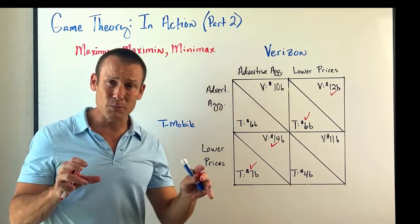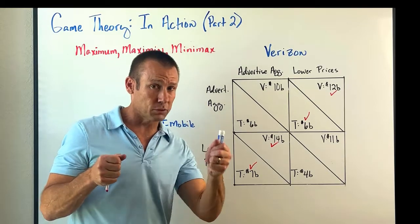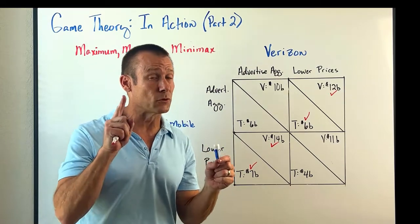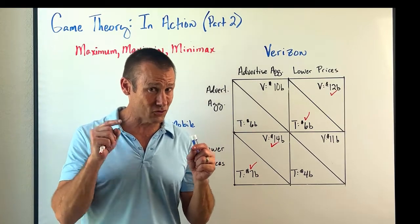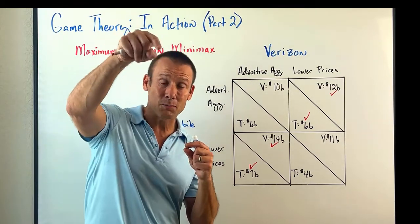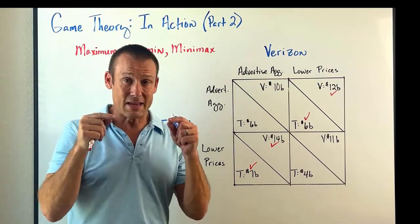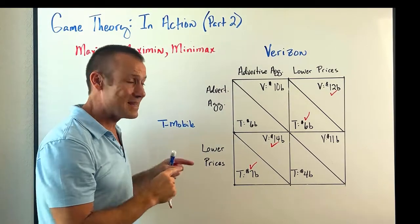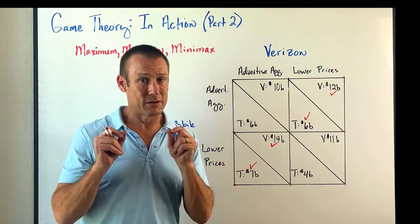If neither player has a dominant strategy, what should they do? If you have a dominant strategy, it's in your self-interest to play it. If you don't have one but the other player does, you see the world through their eyes and determine your strategy based on them playing theirs. But in this game, neither one has a dominant strategy, so we need to consider other approaches.